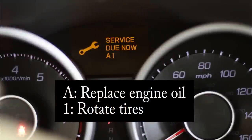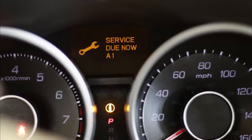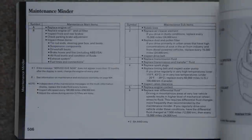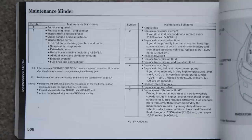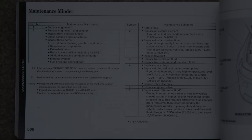Here's the error code or the service do now indicator in A1, which means replace engine oil. One is the rotate tires. If you look at your owner's manual, page 506, it gives you a complete list of all the codes. A says replace engine oil, but I'm not going to replace my oil without changing the filter, so I'm going to go ahead and do both of them. If you ever get a code like a B2 or a B4, just look in your owner's manual and it'll tell you exactly what the maintenance steps are going to be needed to complete that.